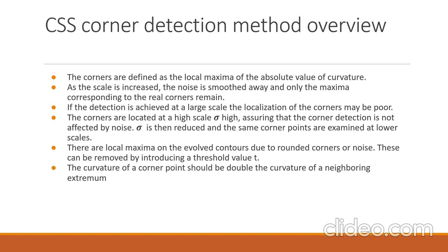The curvature of corner points should be double the curvature of the neighboring extremum. This is because for rounded corners, we may sometimes get values higher than the threshold, but we don't want these rounded corner points — we want real corners. For real corners, neighboring pixels will have very low curvature compared to the corner point, but for rounded corners even neighboring pixels have very high curvature. In this way, rounded corner points can be removed.